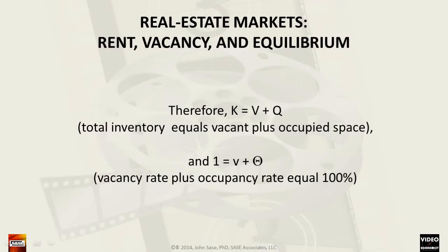Therefore, large K, the total inventory of property in a market, equals the sum of large V, the square footage of vacant land, and large Q, the square footage of occupied space. We note that as percentages of large K, the total inventory, the sum of the vacancy rate plus the occupancy rate must equal 100%. Working with small v, the vacancy rate, and theta, the occupancy rate, in respect to large K, the total inventory of property, we can graph contrasting demand curves.